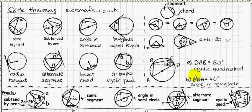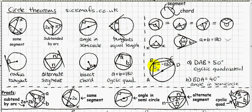Next, find angle BDA. Using the angle in a semicircle theorem, that angle is 90 degrees. We already know angle DAB is 50 degrees. Since angles in a triangle add to 180, we have 50 plus 90 equals 140, so the remaining angle BDA must be 40 degrees.